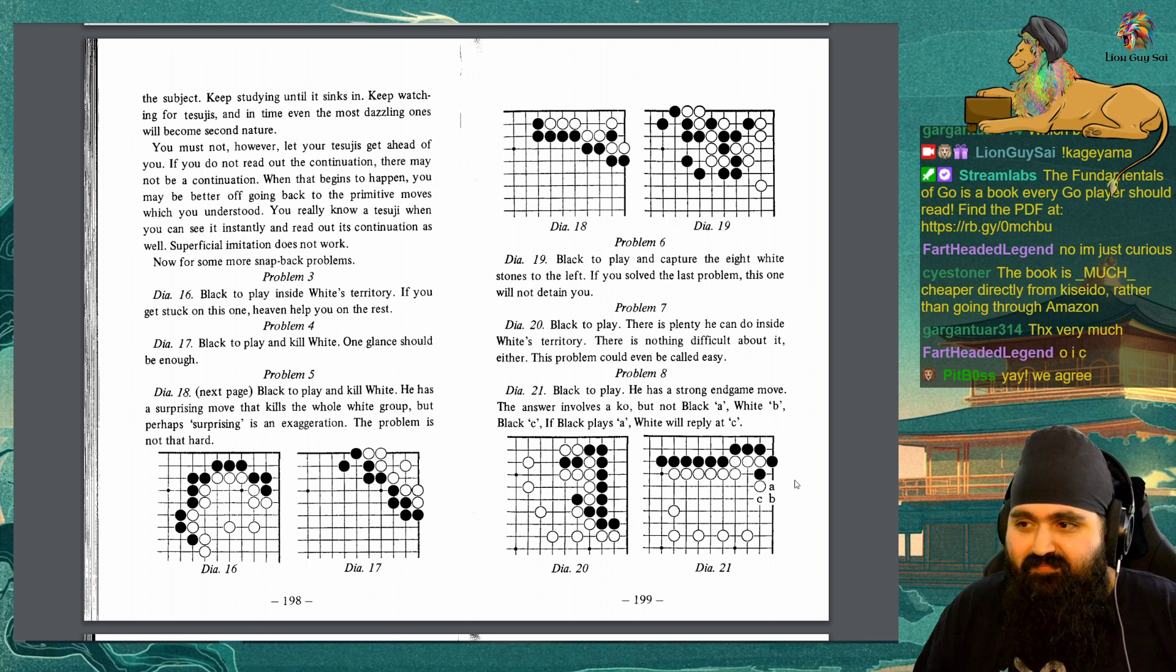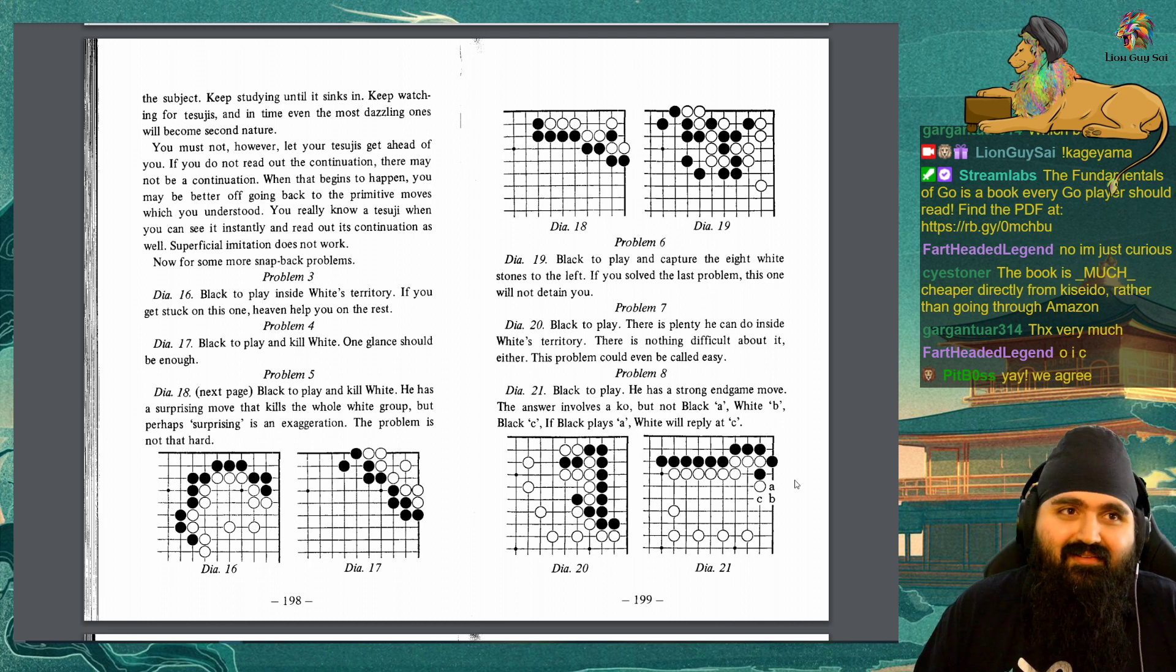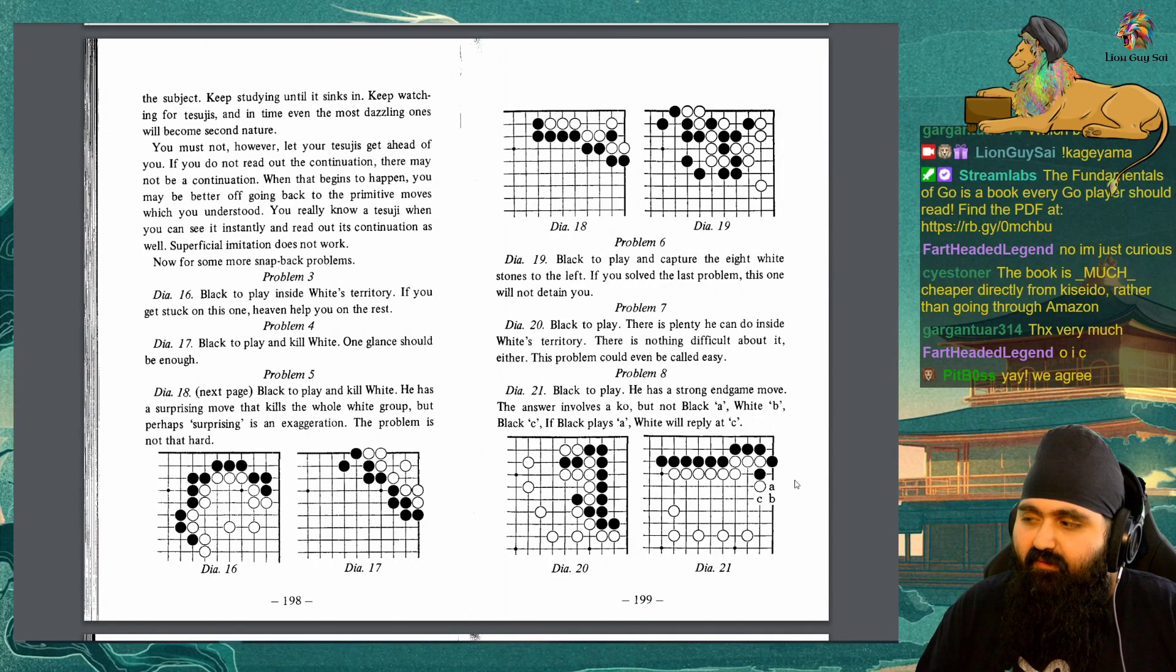You must not, however, let your tesuji get ahead of you. If you do not read out the continuation, there may not be a continuation. When that begins to happen, you may be better off going back to the primitive moves which you understood. You really know a tesuji when you can see it instantaneously and read out its continuation as well. Superficial imitation does not work. Now for some more snapback problems. Problem 3: Black to play inside white's territory. If you get stuck on this one, heaven help you on the rest. Problem 4: Black to play and kill white. One glance should be enough. Problem 5: Black to play and kill white. He has a surprising move that kills the whole white group, but perhaps surprising is the exaggeration. The problem is not that hard.